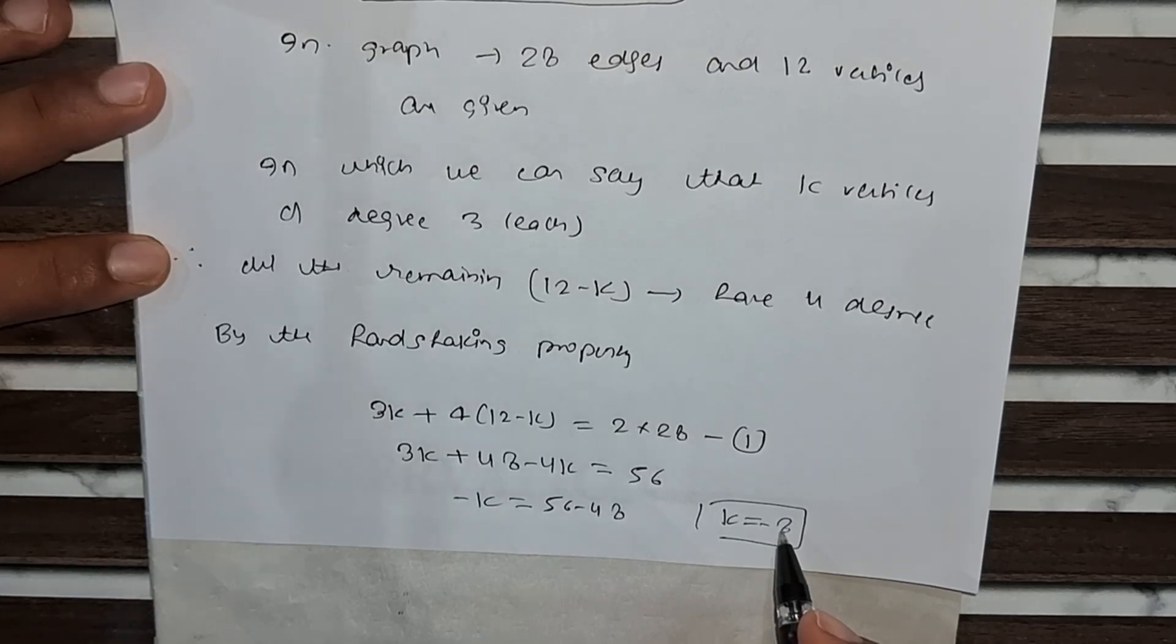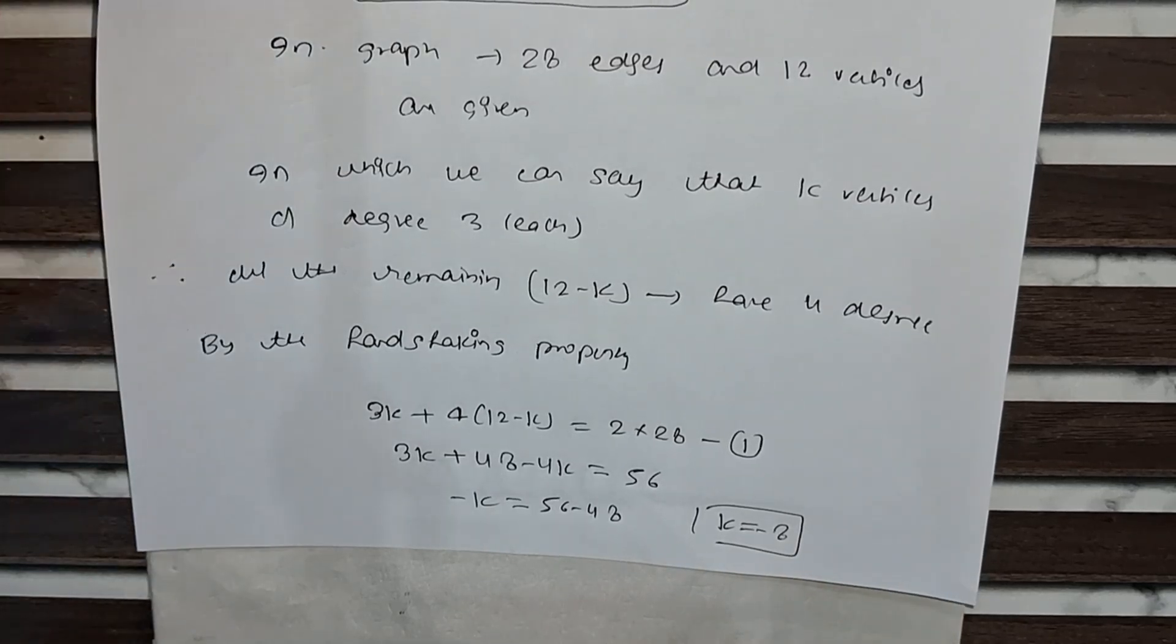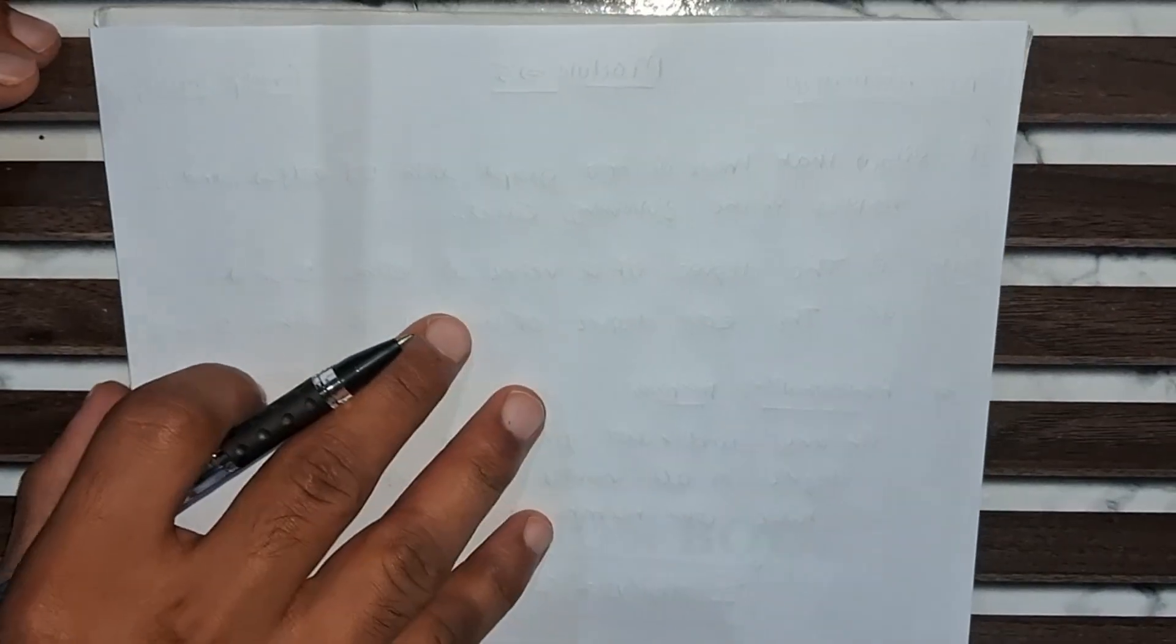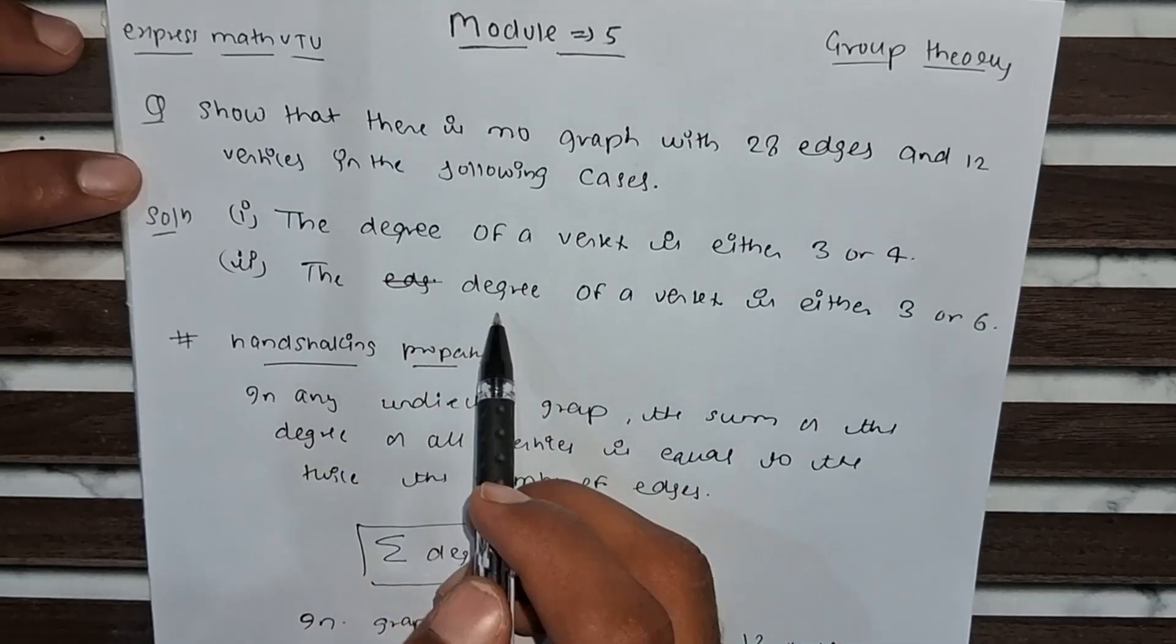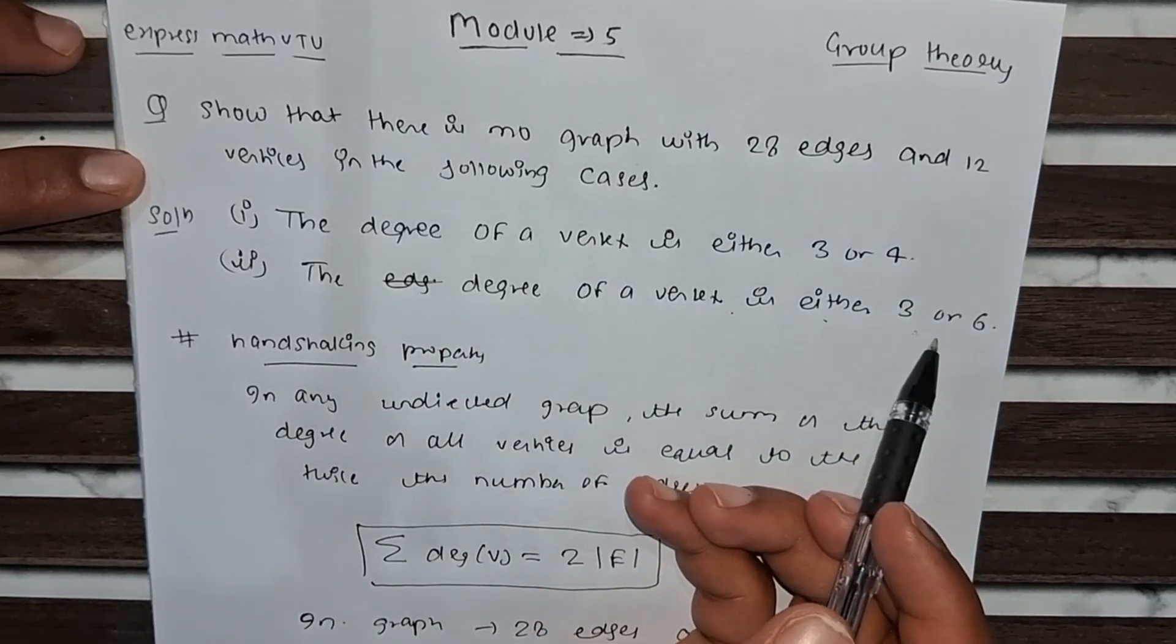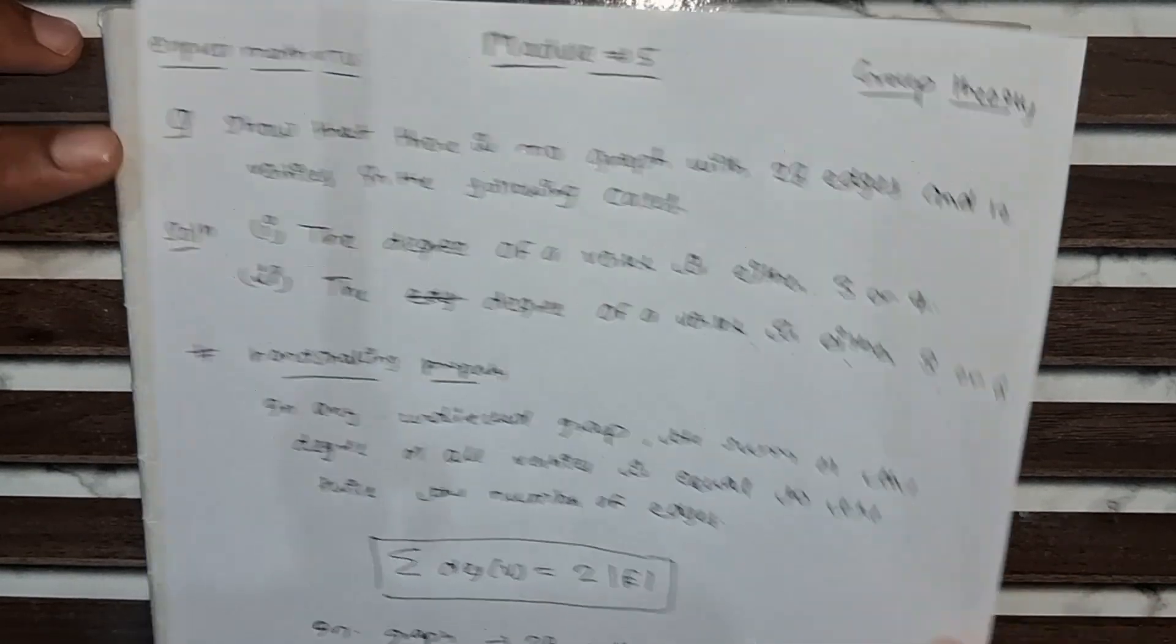Here k is non-negative, so which is not possible because k has to be non-negative. So k equal to minus 8 is not possible. So like that, we go for the second part. What is our second part? In the second part, the degree of vertices is either 3 or 6.